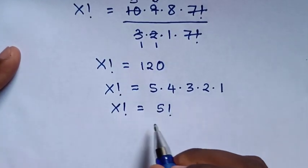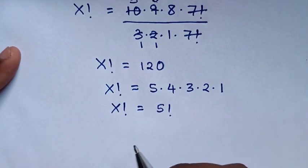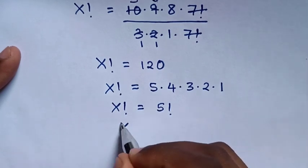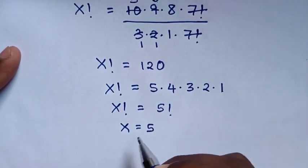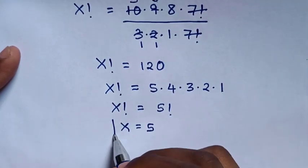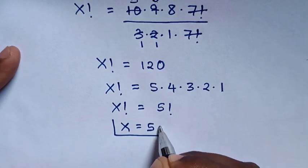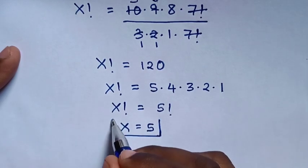Now when you compare x factorial equals 5 factorial, then x equals 5. So this is the final answer for the value of x.